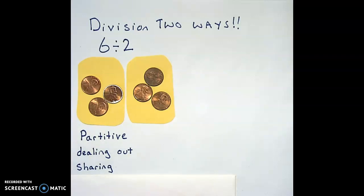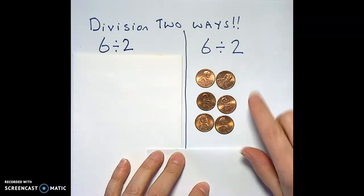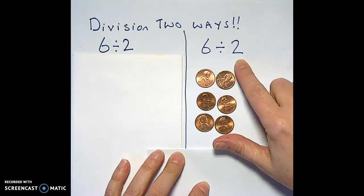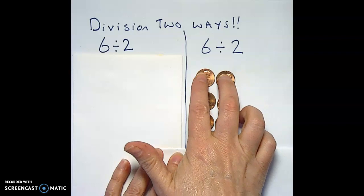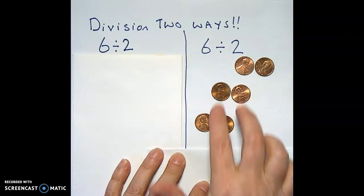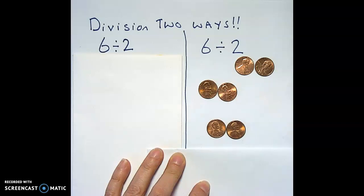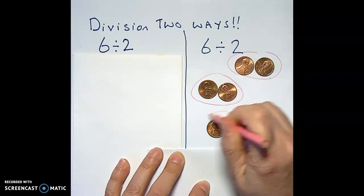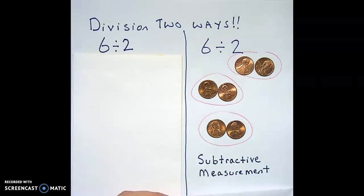Now for the next technique, using the measurement concept of division, you have six things and you're being asked how many groups of two can we take away from six. This would be repeated subtraction, so we can take away two from six one, two, three times. So this one ends up with three groups of two. So here's our one, two, three groups, and that was again called the subtractive or measurement.